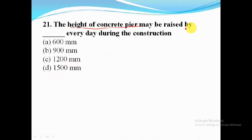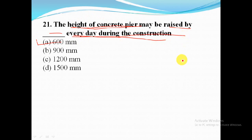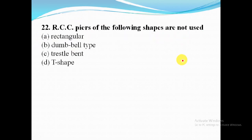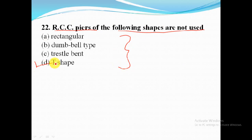The height of a concrete pier may be raised by 600 mm every day during construction. Among RCC pier shapes, the T-shape is not used in RCC piers.